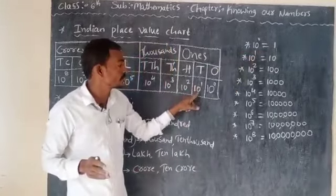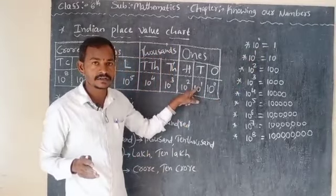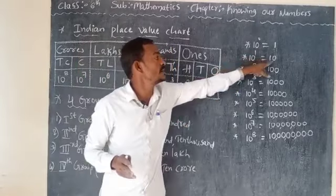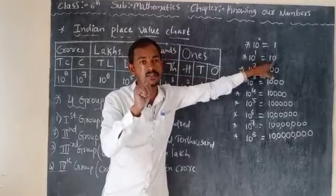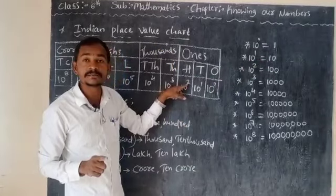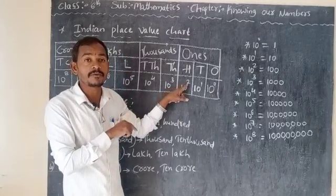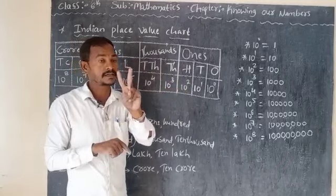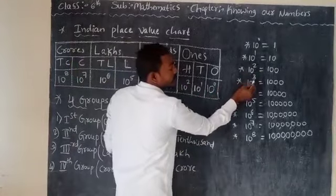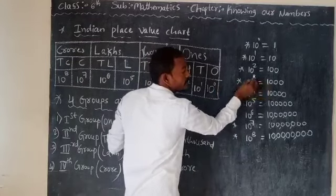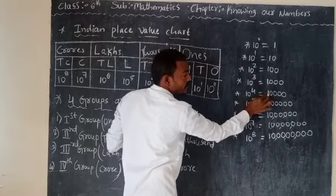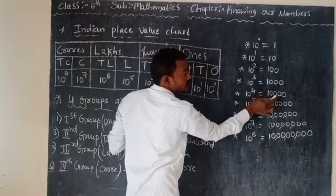Then 10 raise to 1 means 10 — in front of 1 there is one zero. 10 raise to 2 means in front of 1 there are 2 zeros. 10 raise to 3 means in front of 1 there are 3 zeros. 10 raise to 4 means in front of 1 there are 4 zeros.